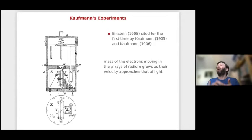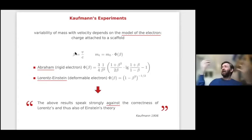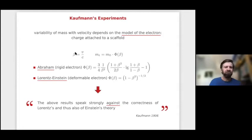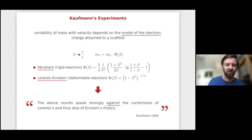Kaufmann measured electrons emitted by beta rays — very fast, approaching the velocity of light — to determine how hard it is to accelerate them as they travel faster. The result was that at the time there were different models of the electron. One was the spherical electron suggested by Abraham, with a particular law for how transverse mass increases with velocity. The second was the Lorentz–Einstein electron — the deformable electron — which increased in a much simpler way.